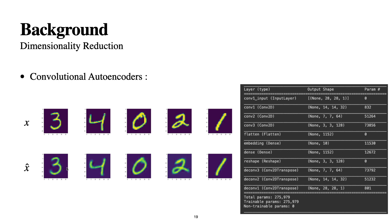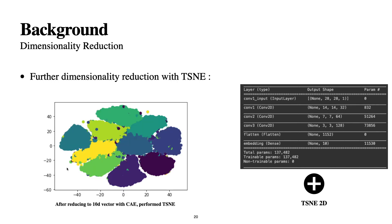I trained my model for only 167 seconds on Google Colab with GPU, and we are already getting really nice results. I went one step further: I threw away the decoder part, compressed to 10D, then reduced it to t-SNE 2D and plotted it. Here we can already see some nice structure — clusters are mixing up a bit, but given that I trained for only 167 seconds, it's not bad at all.